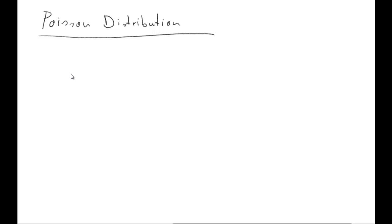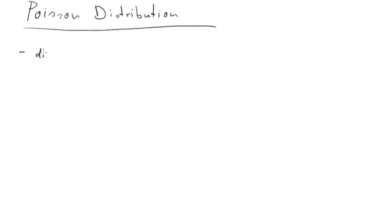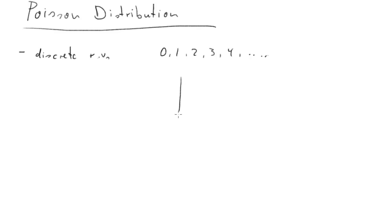This clip is on the Poisson distribution and mainly on the calculations required to get probabilities for the Poisson distribution. It is a distribution for a discrete random variable, and the type of outcomes this variable can take are the natural numbers starting with zero: 0, 1, 2, 3, 4 and so forth, potentially until infinity. That means we'll be looking at a probability distribution.